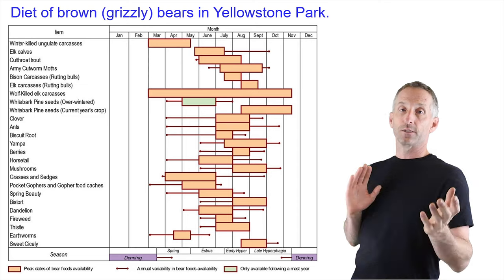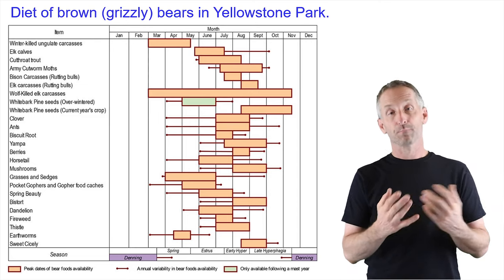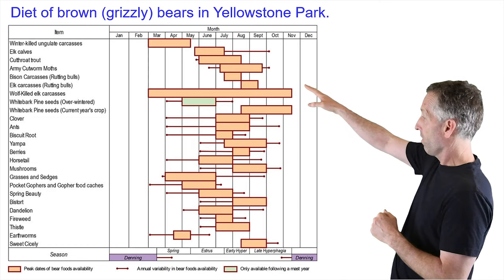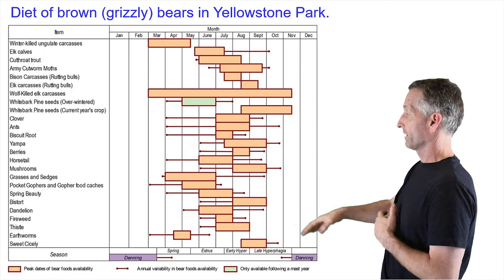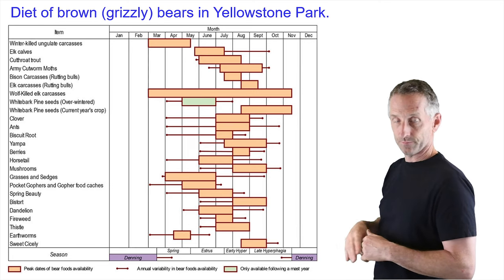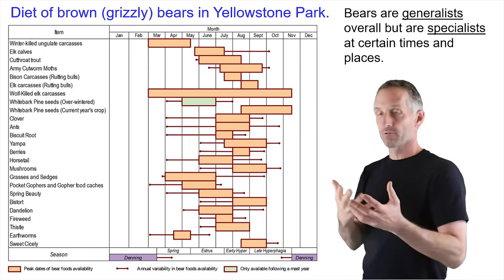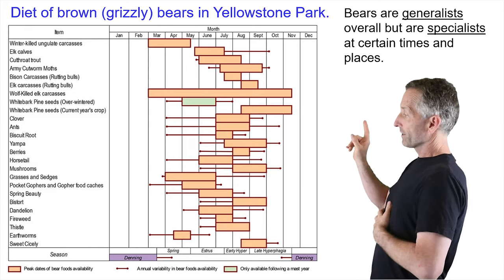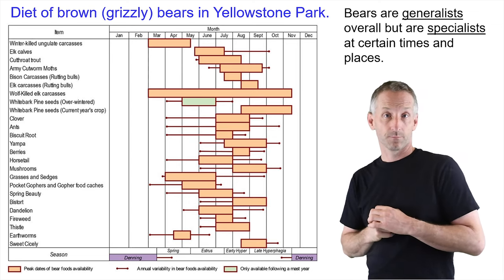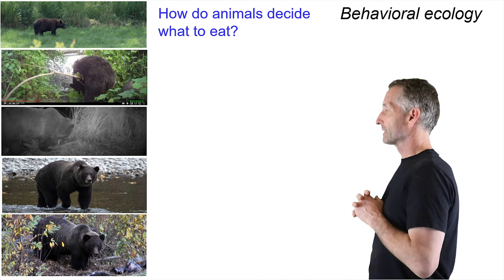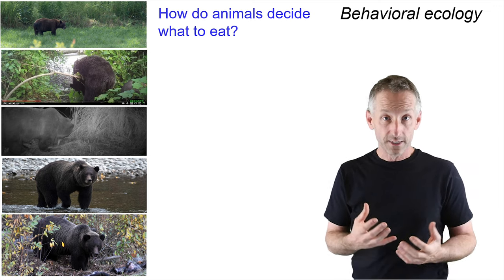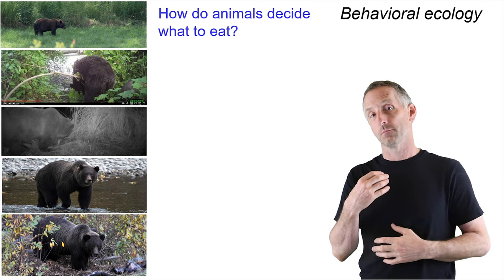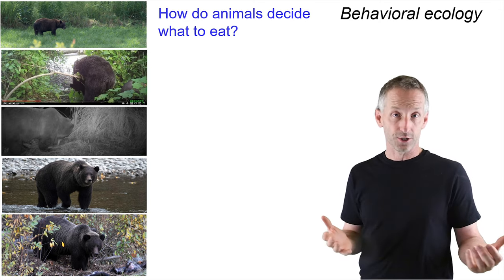Here's a more formal representation of one well-studied population of grizzly bears — the Yellowstone grizzly bears — and all of the different food types they're feeding on at different times of the year. This means that bears are generalist consumers overall, but importantly they're also specialists at certain times and places. This leads to questions in behavioral ecology: how are animals behaving in relation to the environment?